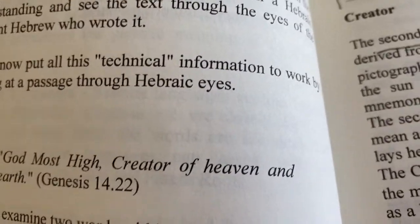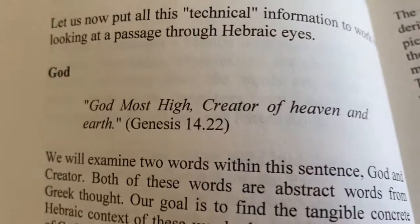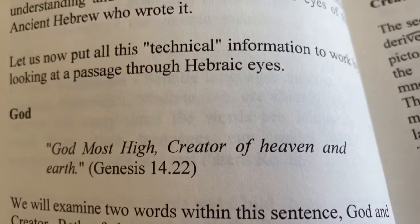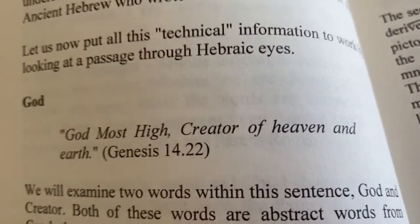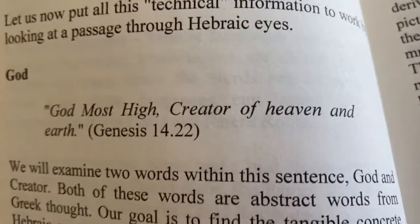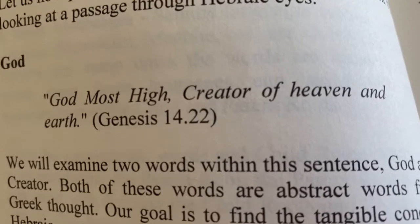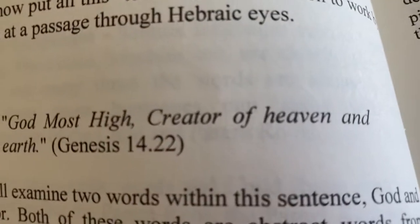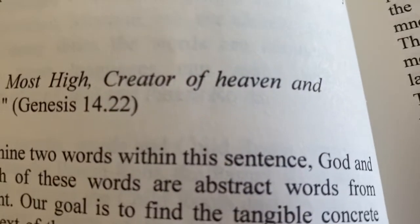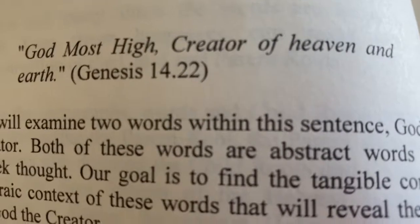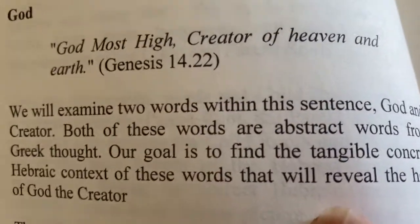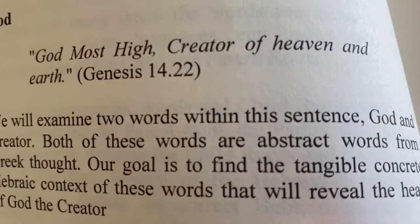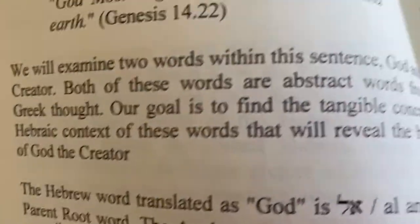Here is a verse in the Bible — Genesis 14:22 — where it says 'God, most high creator of heaven and earth.' When we read of God, we have in our mind some modern idea. But this was written thousands of years ago to a people who don't understand abstract things. They're more visceral. So when you say God, what do they hear in their times?